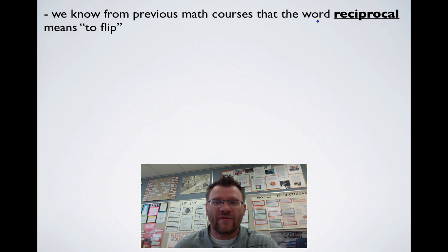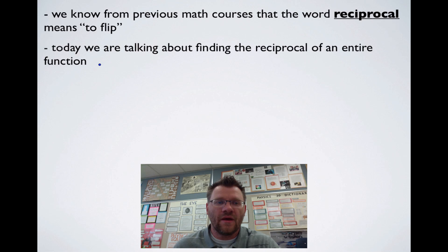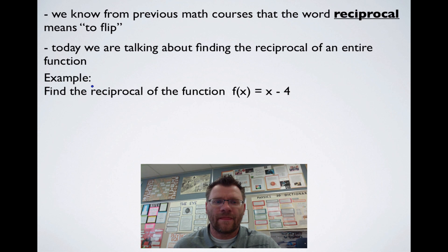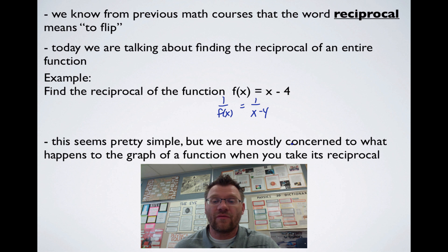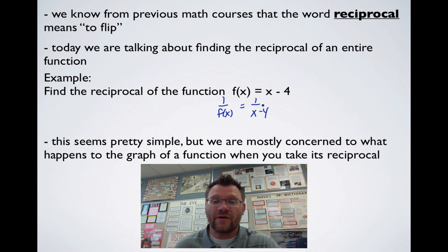We know from previous math courses that the word reciprocal means to flip. Today we're going to be talking about finding the reciprocal of an entire function. For example, find the reciprocal of the function f(x) = x - 4. The reciprocal of that would be 1 over f(x), which means 1 over (x - 4). What we're concerned with is what happens to the graph of the function when you take its reciprocal — this is clearly a line, so we'll find out what happens to the graph of a line when we take the reciprocal.